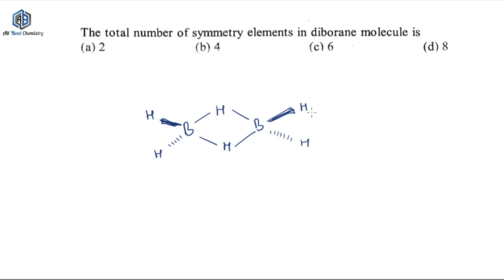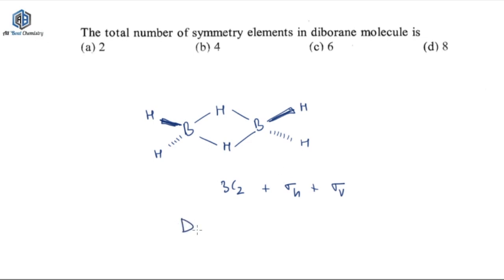The point group of this particular molecule — you are all aware about that, right? It will have three C2 axes: one primary and two considered as secondary. Then you will have a horizontal plane and vertical planes as well. The point group of this molecule comes out to be D2H.